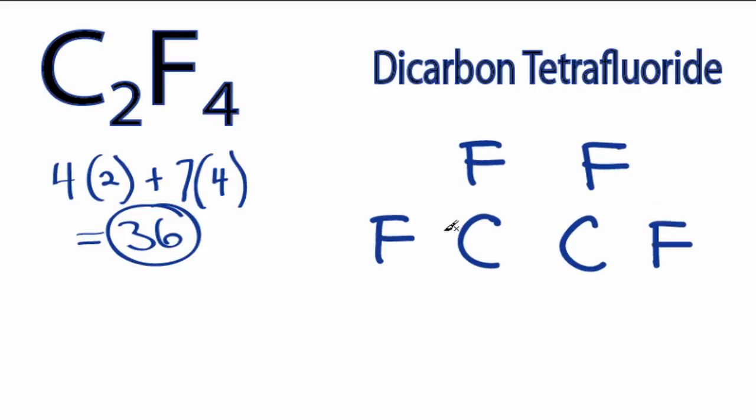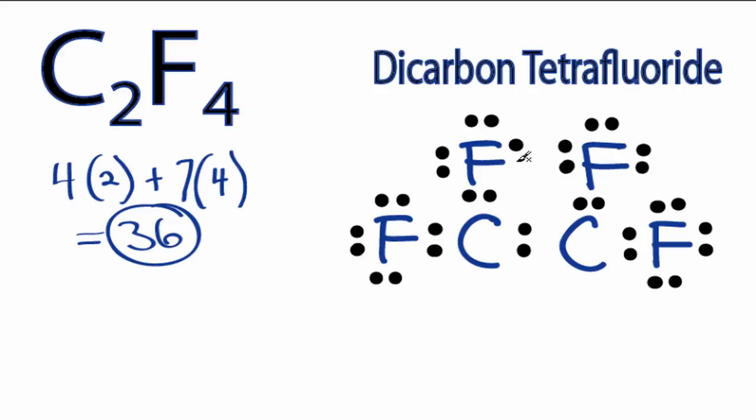We have a total of 36 valence electrons for C2F4. We'll put a pair of electrons between each carbon and fluorine to form chemical bonds. So we've used 2, 4, 6, 8. We'll put 2 in the center here, 10, and then go around the outside, 12, 14, and 34. So we've used 34 valence electrons, but we had 36 to start out with. So we'll put these here, and we've used all 36.